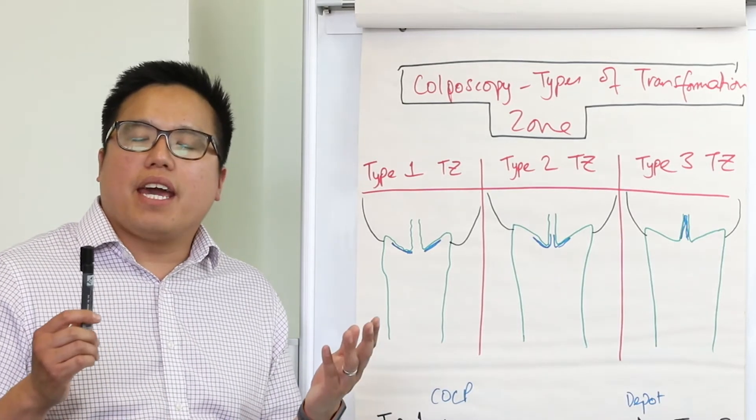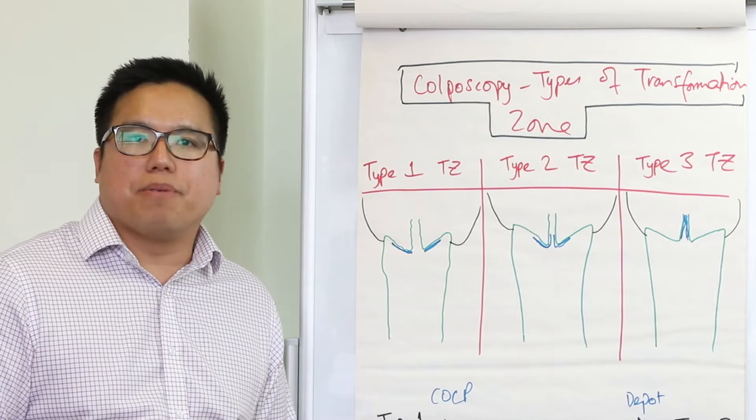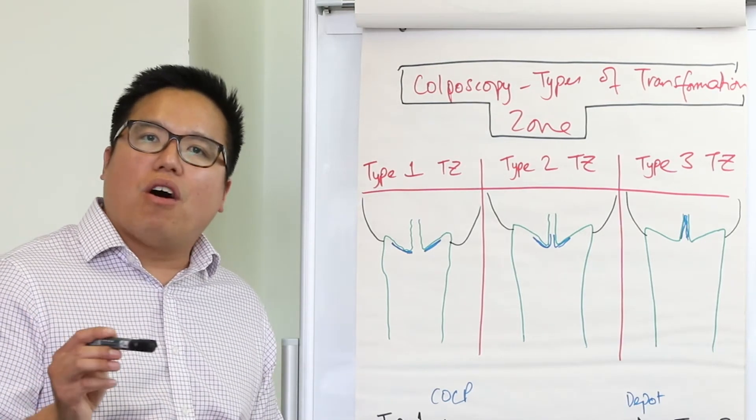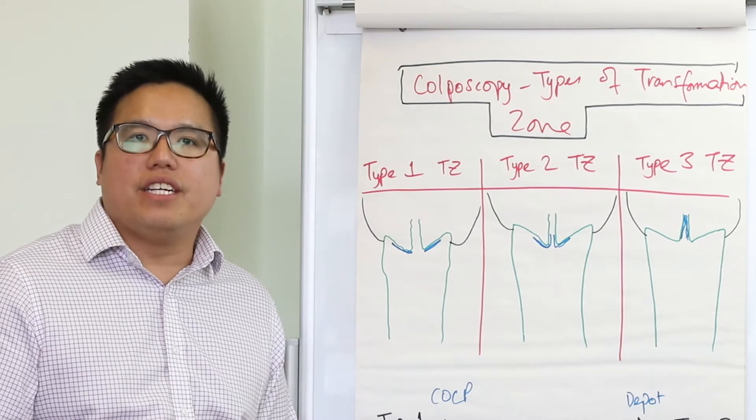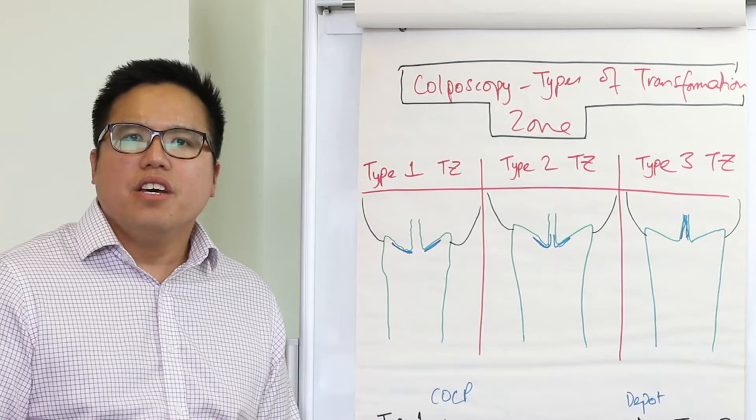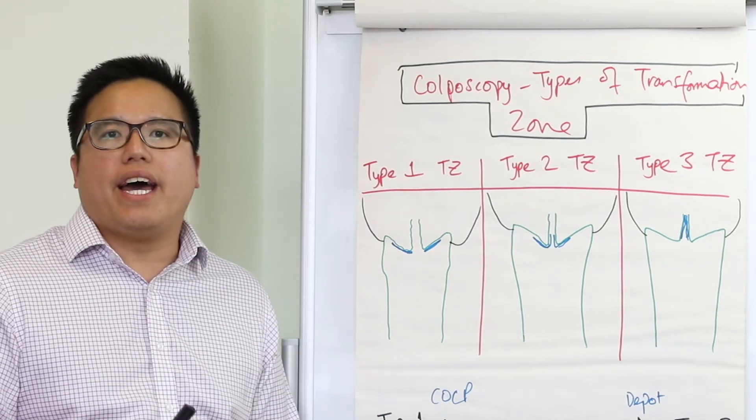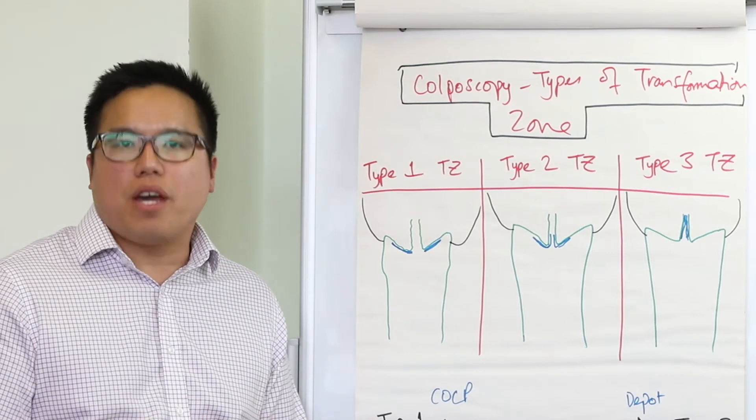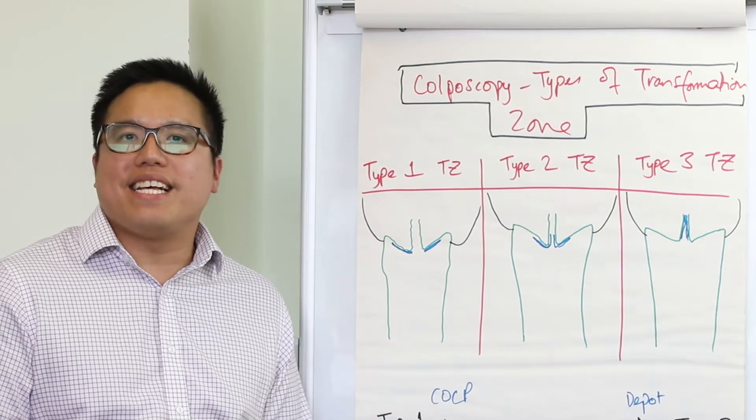Now colposcopists are looking for something in particular when they do their colposcopy, and that is the transformation zone, so that they can then apply their acetic acid and iodine so that they can look and identify CIN. Just to remind you, the transformation zone is where the columnar epithelium metaplases into squamous epithelium, the so called SCJ.